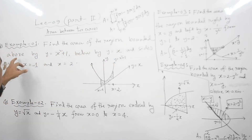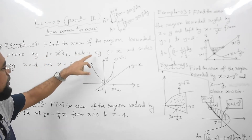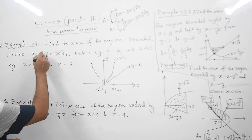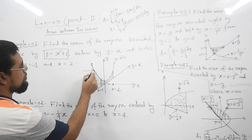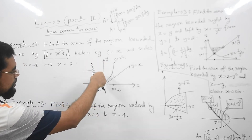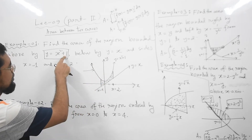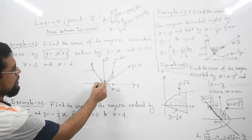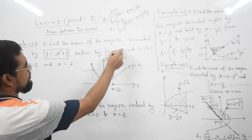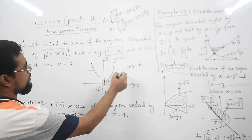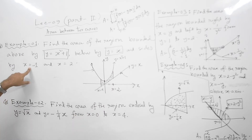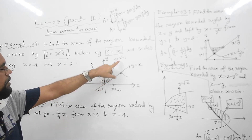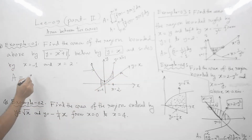In Example 1, find the area of the region bounded above by y = x² + 1 and below by y = x, and sides by x = -1 and x = 2. Here you have two curves: y = x² + 1 is a parabola open upward with vertex shifted up by 1, and y = x is a straight line. You need to integrate from x = -1 to x = 2.